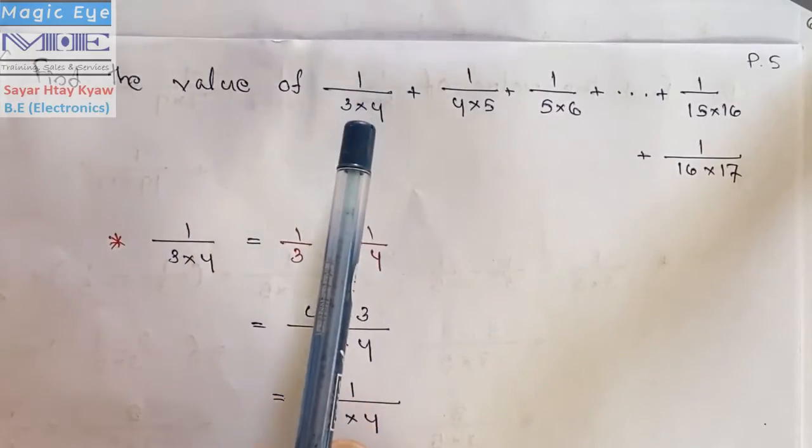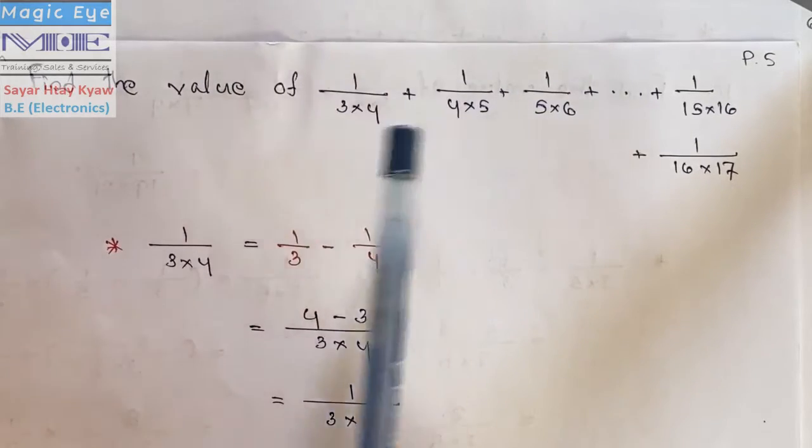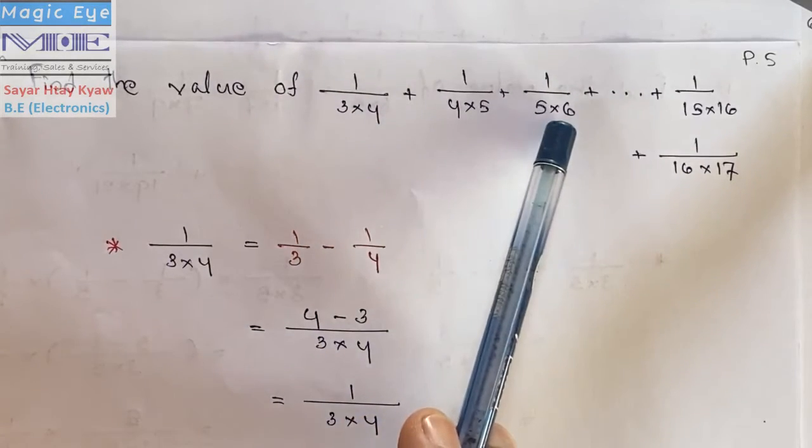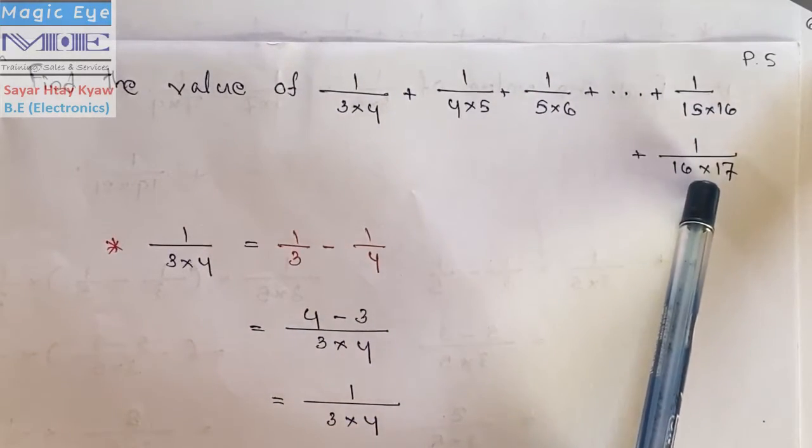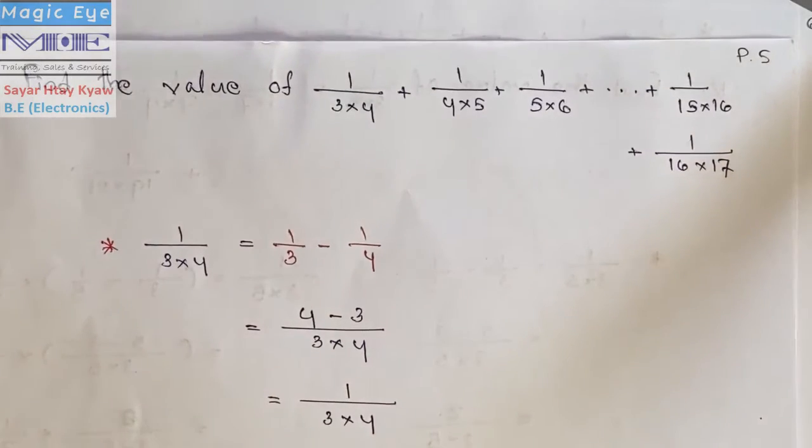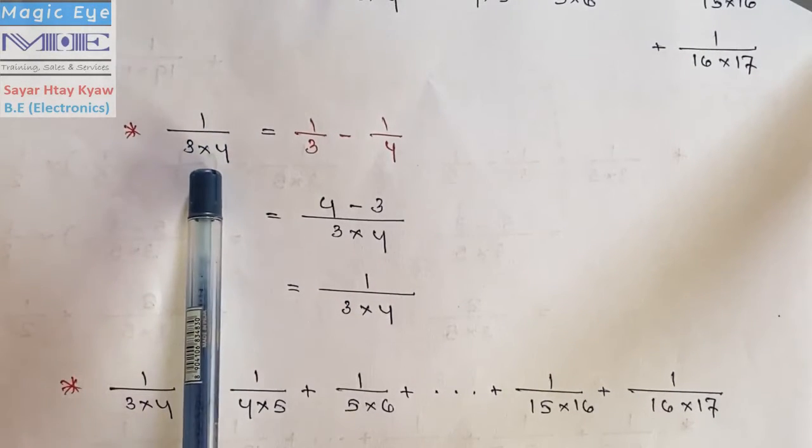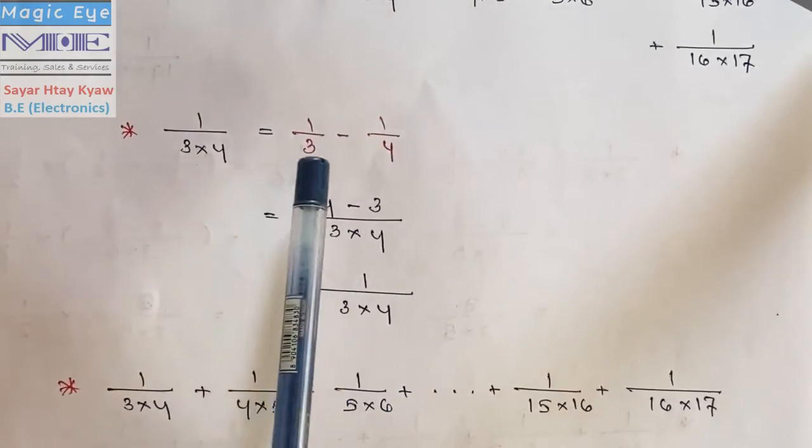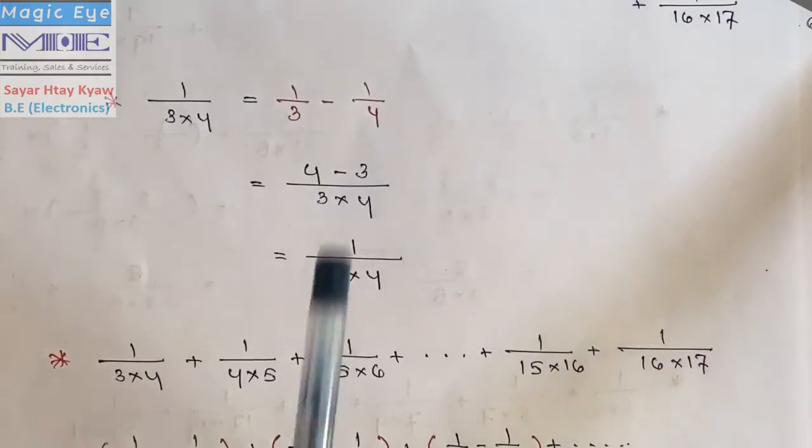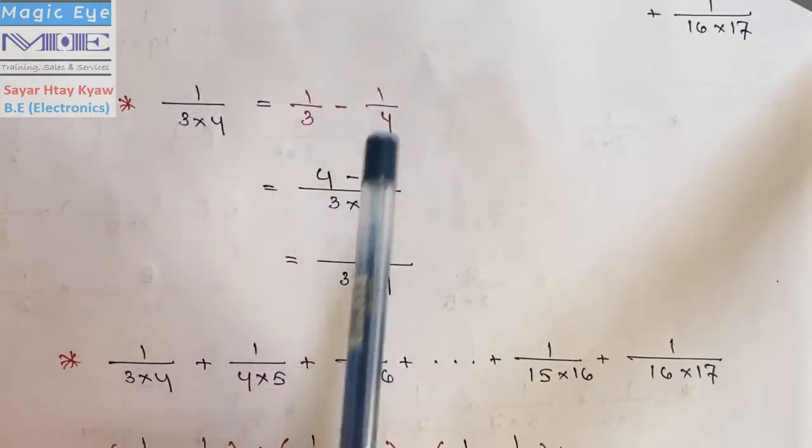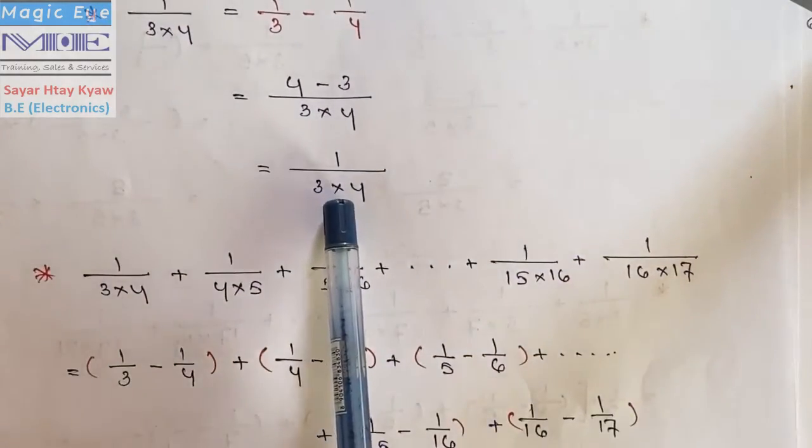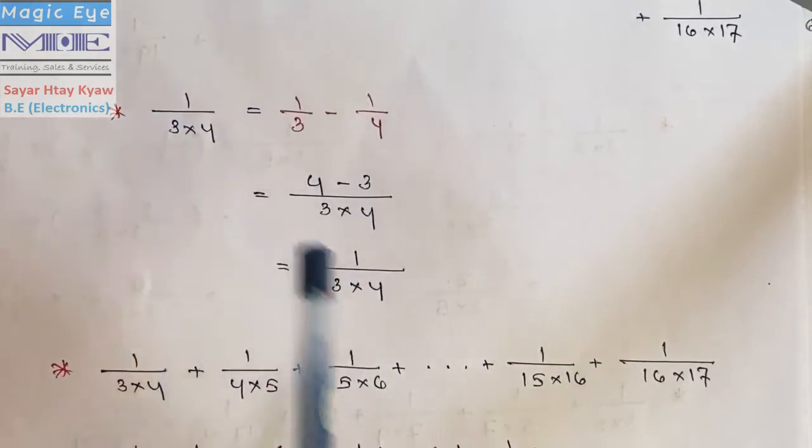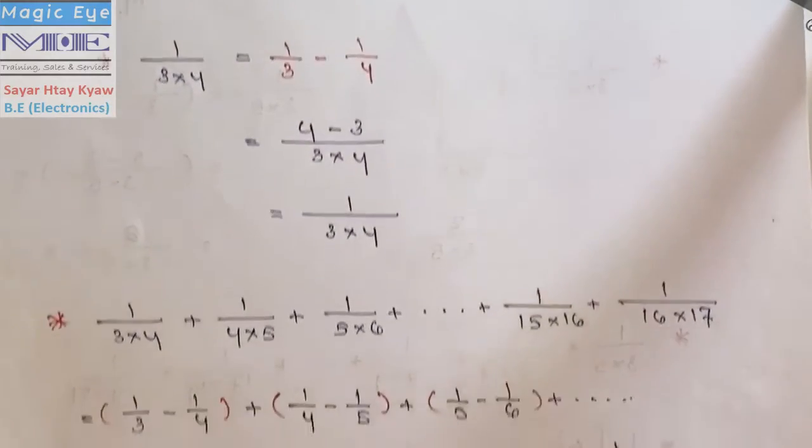Find the values of 1 by 3 into 4, 1 by 4 into 5, 3 to 4, 4 to 5, and then 5 to 6, continuing through the series.